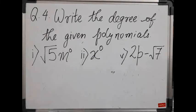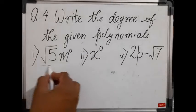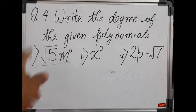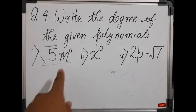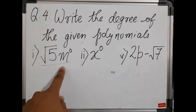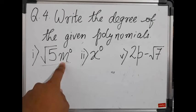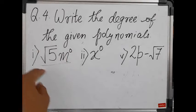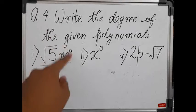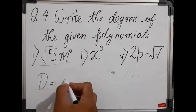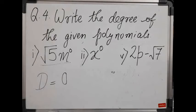So its value will be 1. This term, if we write as √5 m raised to 0, then the resultant value is √5 because m raised to 0 is 1. Here in this term, m is our variable and it is raised to 0. The highest power in this polynomial is 0, so we can say the degree is 0 for this given polynomial.